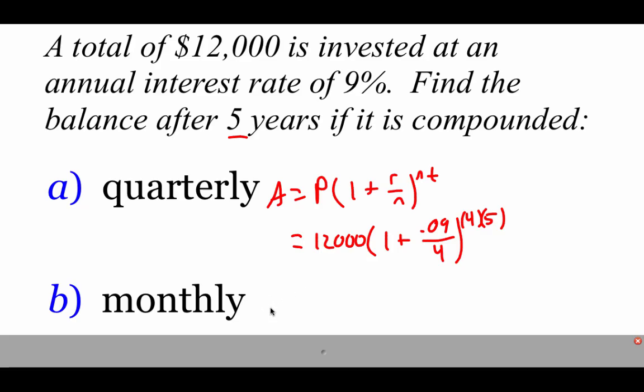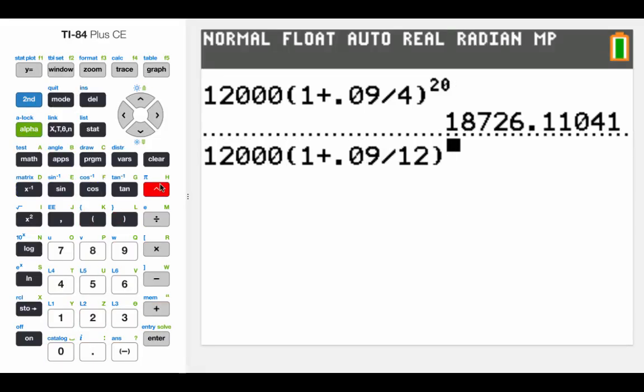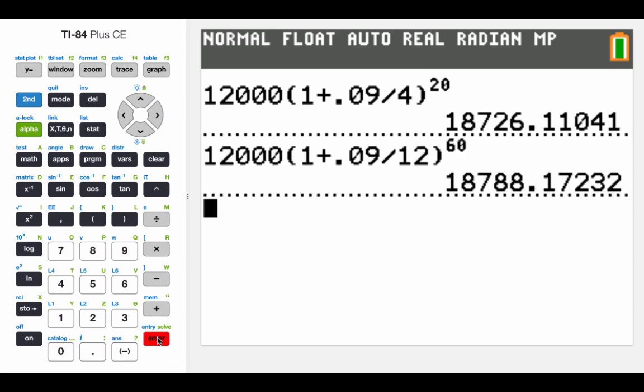With this next example, nothing is going to change except for the number of compoundings. We're going to do this thing monthly now. So as far as plugging in that information, our principal amount is still $12,000 times 1 plus 0.09. Now this N value is changing. We're doing this monthly, so that means 12 times. N value up top is 12 again, and our time frame is still five years. And again, I'm just going to type this stuff into my calculator. Now with this power, when I type it in, I'm going to multiply those things together. We were taking 12 times 5, so that's a power of 60. Hit enter, and I'm going to round this thing off to the hundredths place again. So it would be $18,788.17.